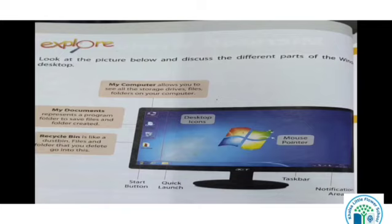My Documents — woh humara sara folders and files jo humne create kiye hue na, woh humara save karke My Documents ke under rakhta hai. Then Recycle Bin — Recycle Bin ek dustbin ki tarah hai. Humm jab delete kar de rakhe kuch chiz, to computer ke under Recycle Bin ki application hai jaha pe humm delete ki hui chiz ko waapas dekh sakti hai. Niche Start button likha hai — woh humari application ke under jaate hai. Uske baad hai Quick Launch — jo pehle tha, start button jab nahi tha na, uske pehle Quick Launch tha, jis se humm directly hummare program mein jaa sakti hai.